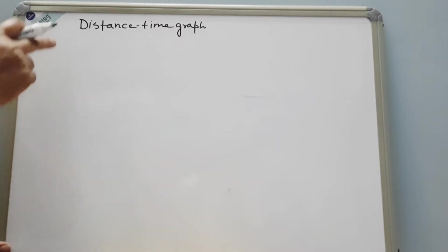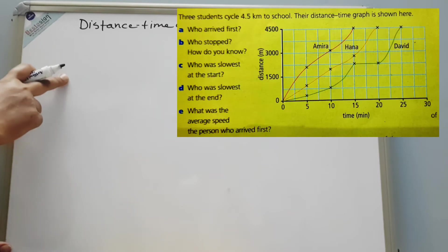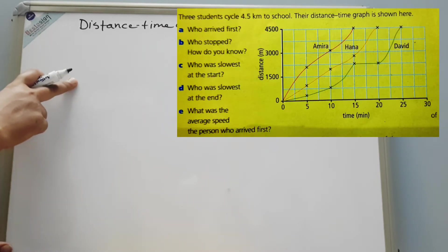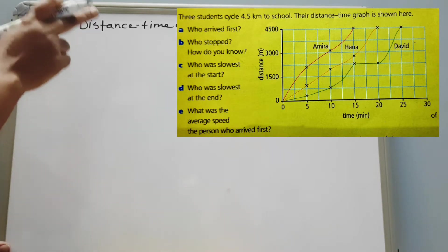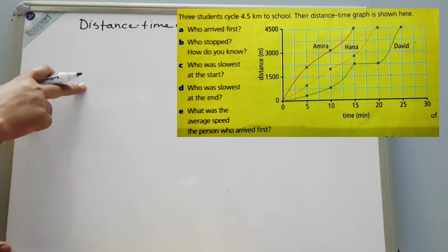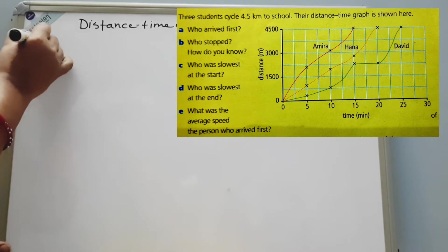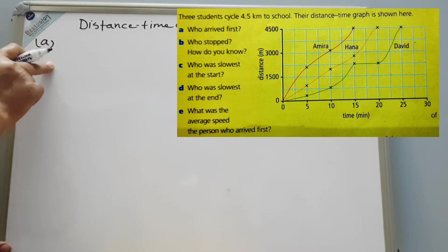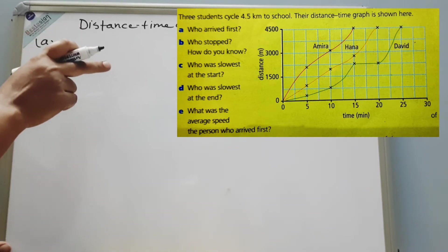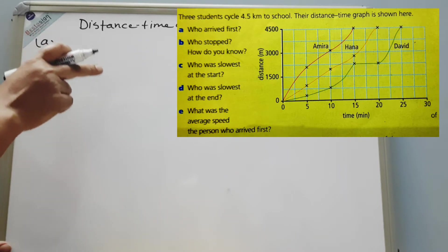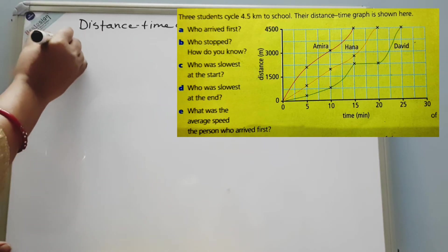Now we will learn how to draw a distance-time graph, but before that, we will discuss the questions given in the previous lesson. The first question was related to a three-line graph where we had to do a comparative study. Question A was: who arrived first? If you look at the graph carefully, among all three, Amira is the one who took the least time to cover the same distance. So the answer is Amira.